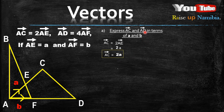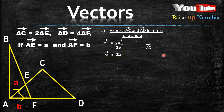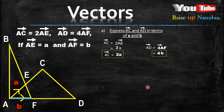Now for AD: the line AD goes from here until here. We are given AD is equal to 4AF. So you write AD equals 4AF, bring the 4 down the same way it is, and ask: what is AF? You go to the diagram and notice AF equals b. So instead of writing AF, you write b — giving you 4b as the final answer for vector AD.